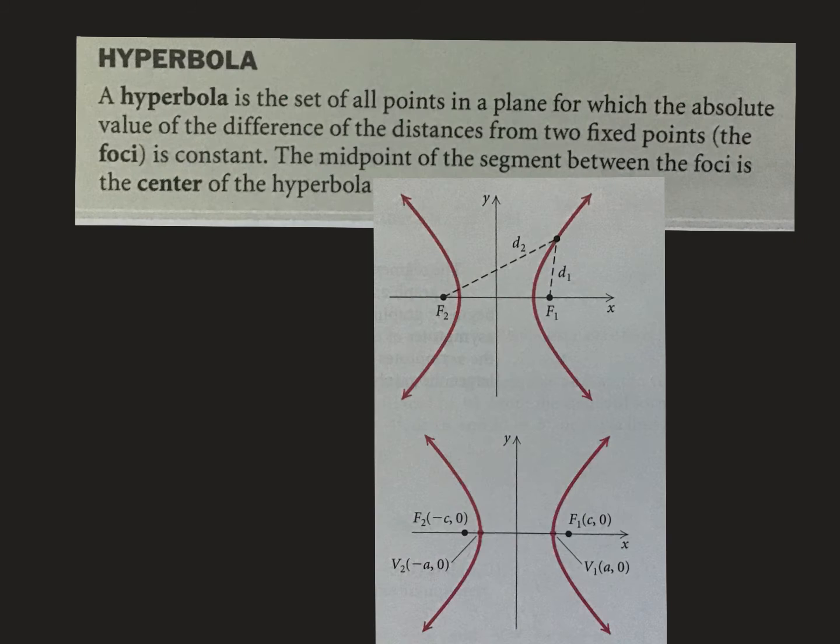Today we have our last conic section called the hyperbola. It's kind of like a backwards ellipse. You can see the picture down there. Think about taking these two curves right here and just flipping them over. If you did that, it would look just like an ellipse. It's really just taking half of an ellipse and turning it the other way. Here's the official definition.